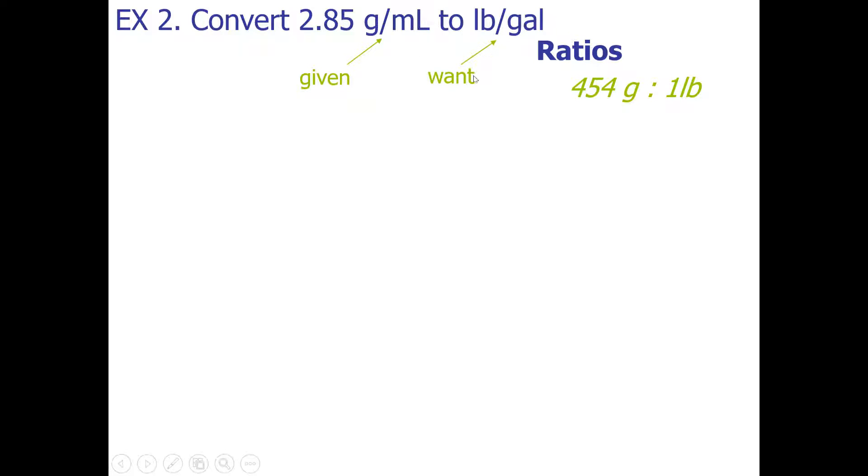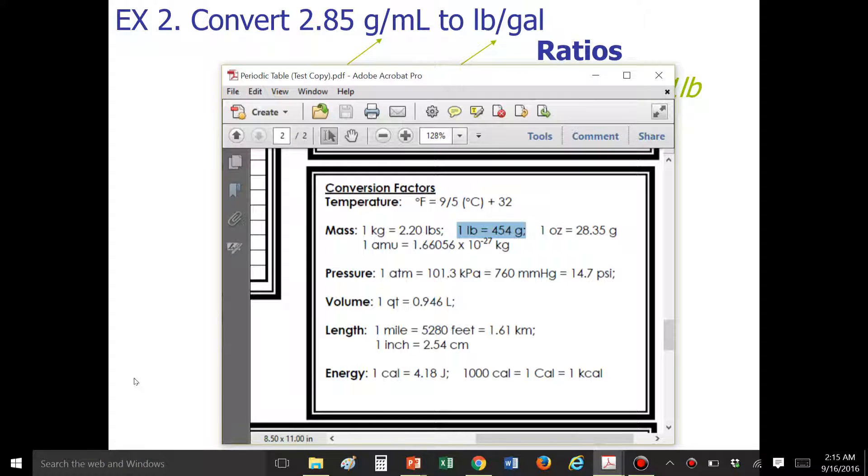Now we want to think about all the conversions that will help us change from milliliters to gallons. Milliliters and gallons are a conversion from metric to USCS, so the back of your periodic table will have conversions that help you change from metric like liters to USCS. This conversion is also going to be useful to us.